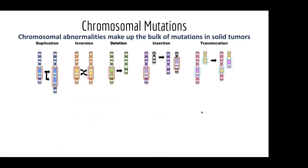What I'm not sure is if you learned about all the different types of chromosomal mutations. In cancer, chromosomal mutations or chromosomal abnormalities make up the bulk of mutations we see in solid tumors — meaning everything except for those blood cancers.